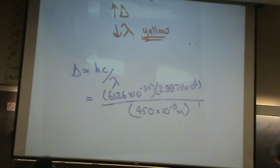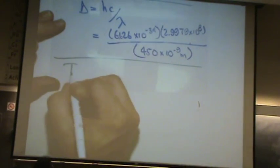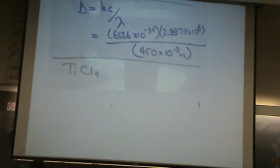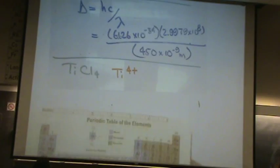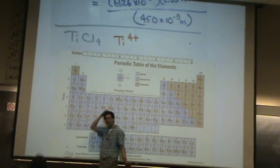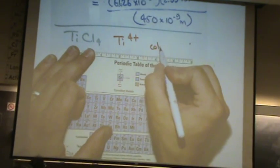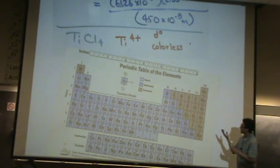I want to do one more thing with color. What's the charge on titanium in this compound? Four plus. How many D electrons does it have? Let's check the periodic table — titanium is in the fourth group. If it's four plus, how many D electrons are there? Zero. What color is it? Colorless — you can say white or colorless, I'd accept either. Whenever it's D0 or D10, it will be colorless.